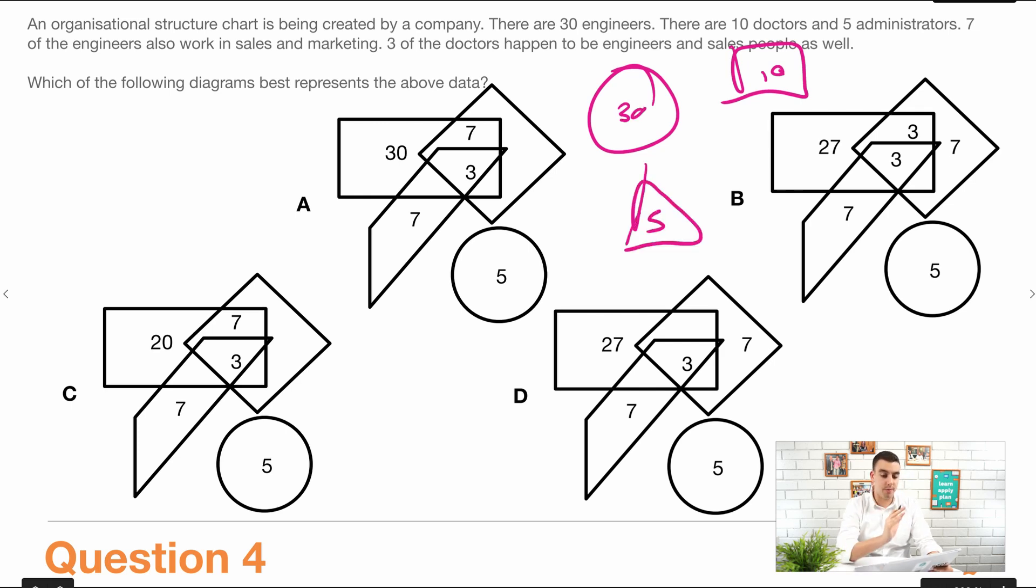So I know that that's how many we have because it says there are, but it hasn't told me how they overlap yet, and that part's about to come. So seven of the engineers also work in sales and marketing. So we have a new shape that, let's just make it a trapezium. So we know seven of the engineers also work in sales and marketing. So I'm going to put a little seven there. And remember, overall, there are 30 engineers. So I have to make this 23 now, right? 30 minus the seven that are also in that segment here.